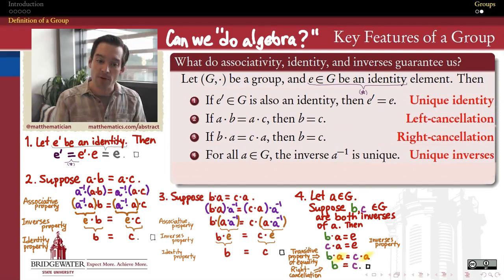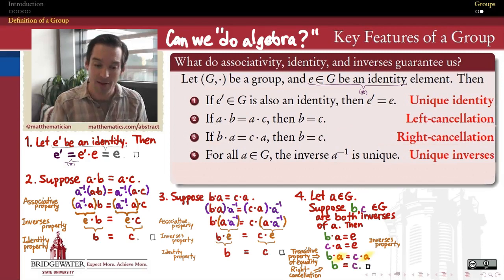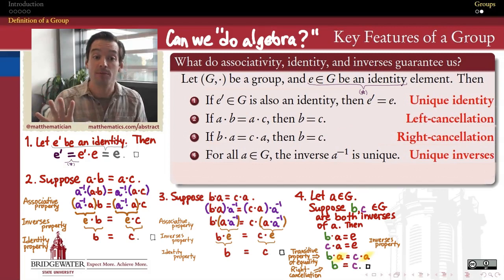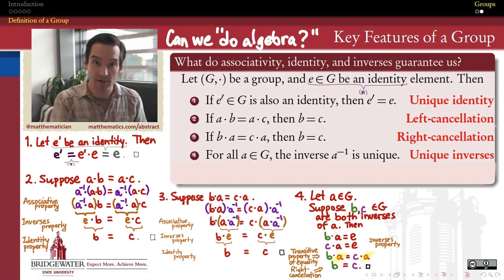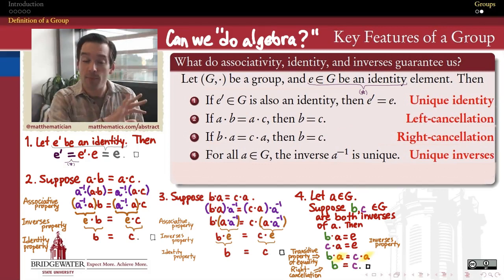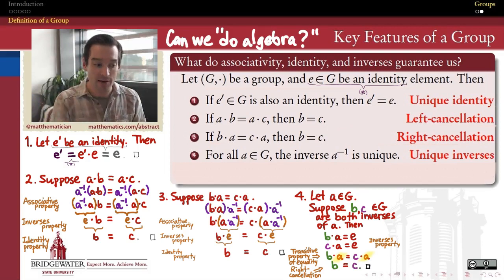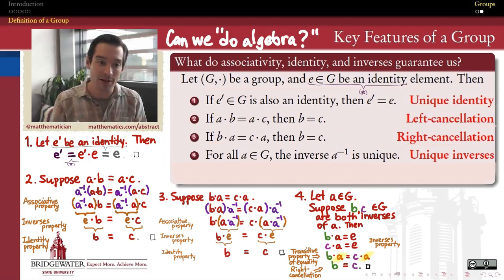So every element in a group not only has an inverse, but that inverse is unique. For example, in the group of integers with the operation of addition, the element 5 has an inverse, negative 5 — because 5 plus (−5) equals 0, which is the identity element. There's no other number in that system that gives us the identity when added to 5. It's a nice little monogamous relationship that every element in a group has with its inverse.